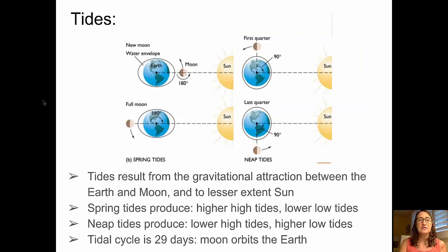Let's focus our attention on tides first. Tides result from the gravitational attraction between the Earth and the Moon, and to a lesser extent, the Sun. Tides depend on the location of each of those three bodies. In the top diagram on the left side, we see a new Moon, where the Moon, the Sun, and the Earth are aligned, and that forms a tidal bulge around the equatorial regions.